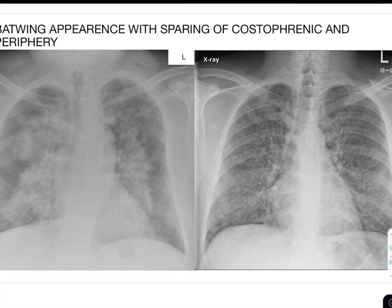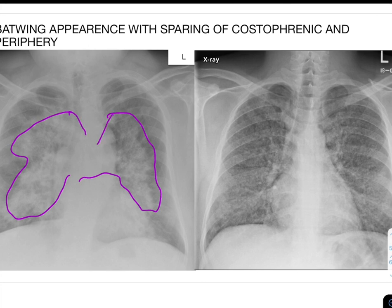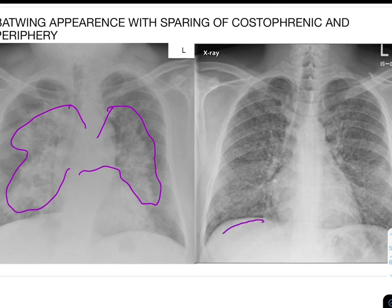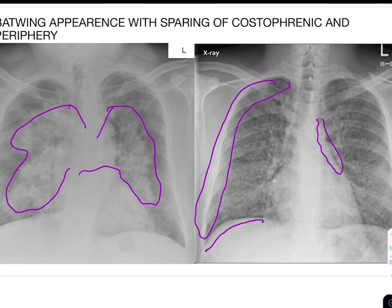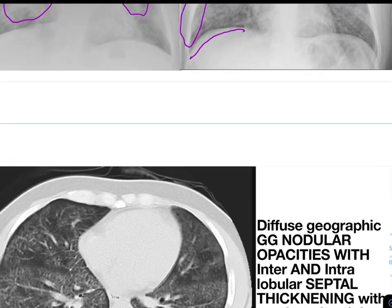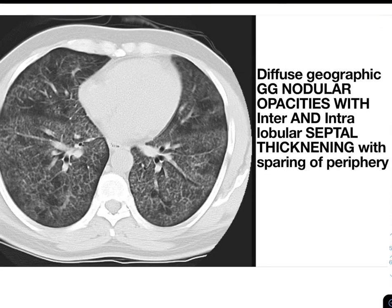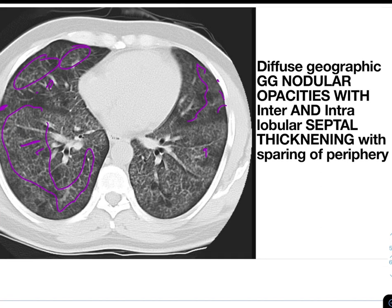As seen on chest X-ray, there is a batwing appearance in the perihilar region with sparing of the diaphragmatic borders and periphery. On CT, there is a geographic distribution of nodular ground glass opacity in some areas while others are spared, with intralobular and interlobular septal thickening visible, and peripheral sparing also evident.